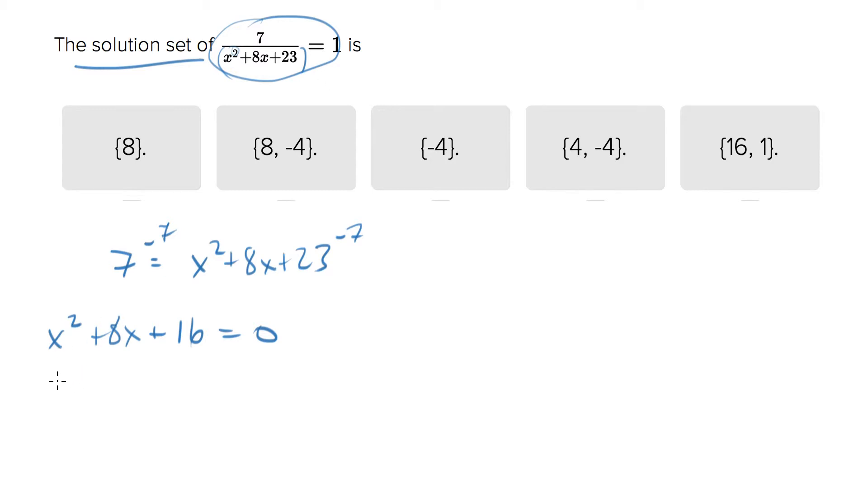Now if we can factor this, then we'll be able to come up with the roots. So what we need to do is split this into a binomial. It starts with x and x and has two numbers in here.